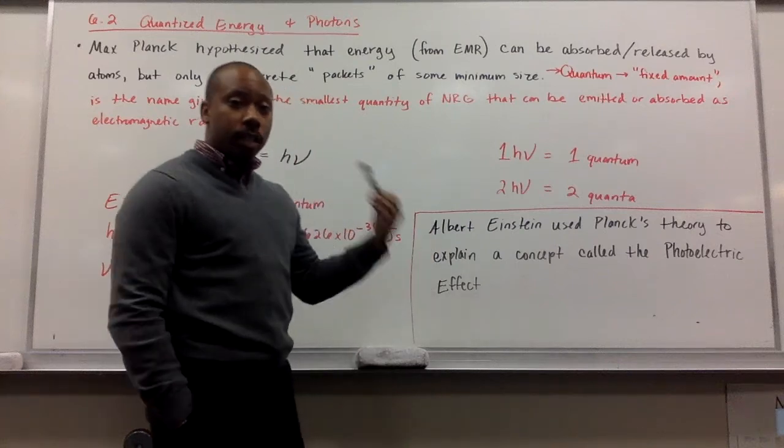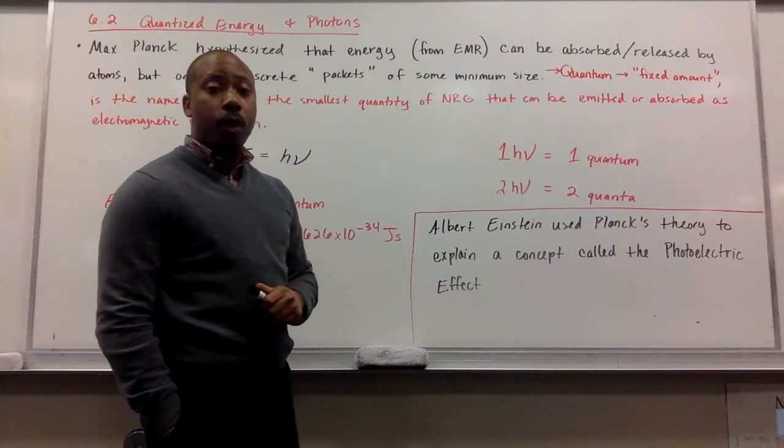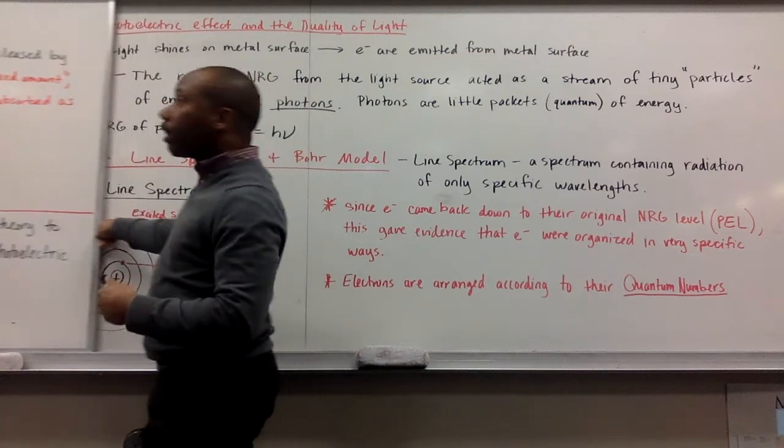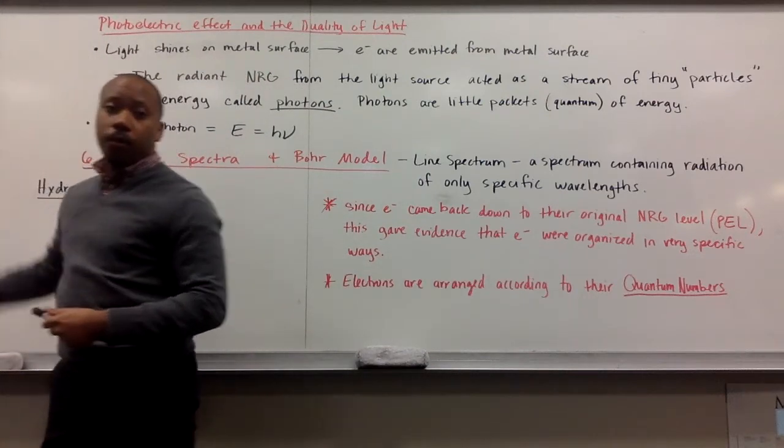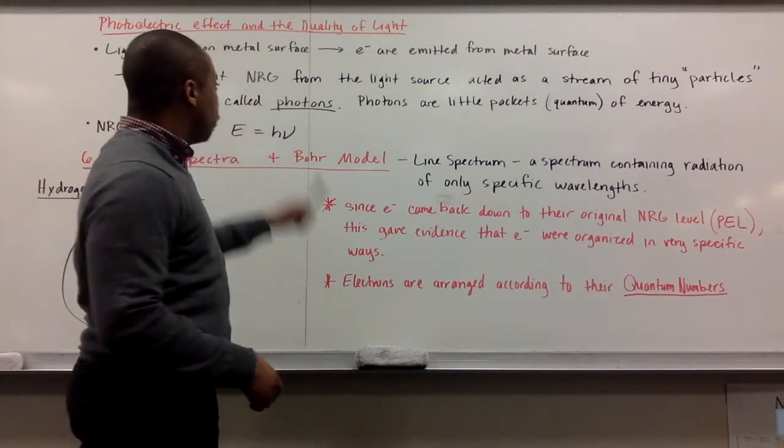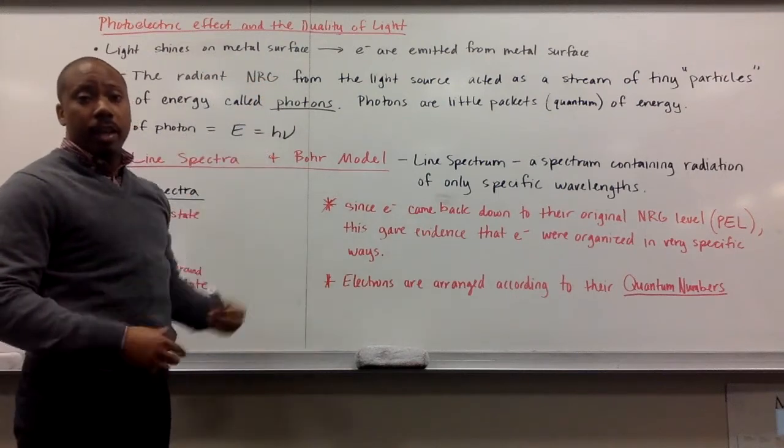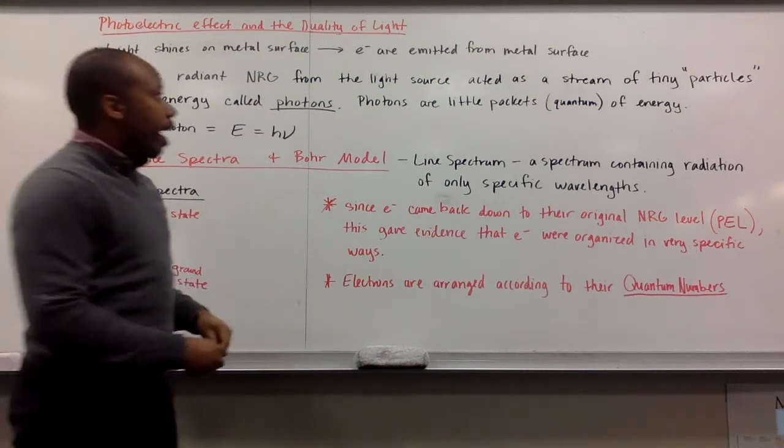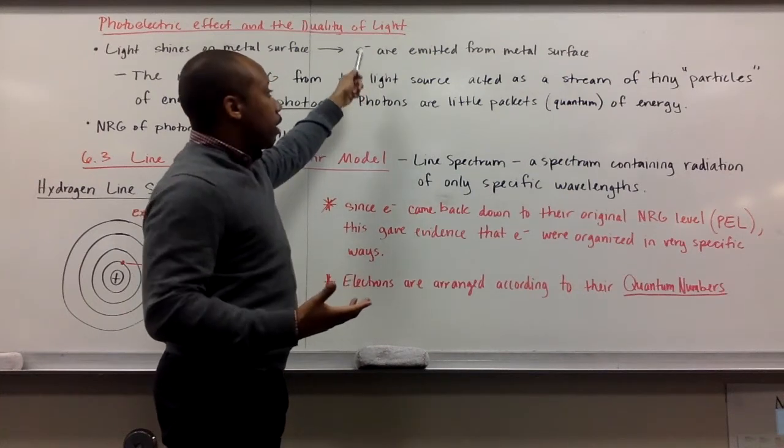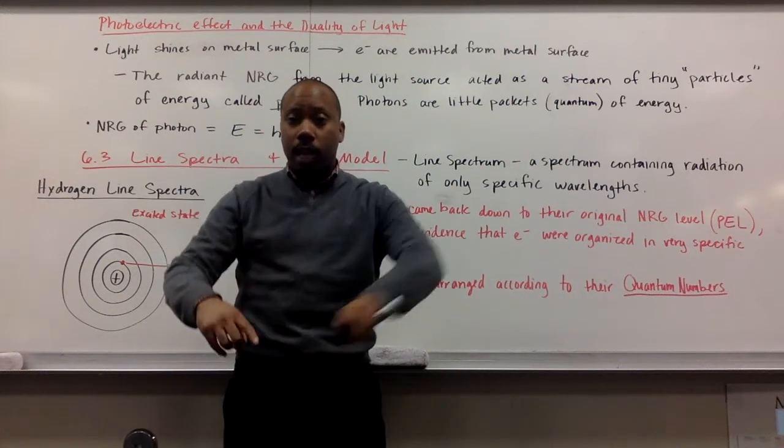Albert Einstein used this hypothesis to predict something called the photoelectric effect, which highlighted how we view light. The photoelectric effect was essentially an experiment that shines light on a metal surface, and it was detected that electrons were emitted from the metal. Light shined on the metal, electrons came off of the metal.